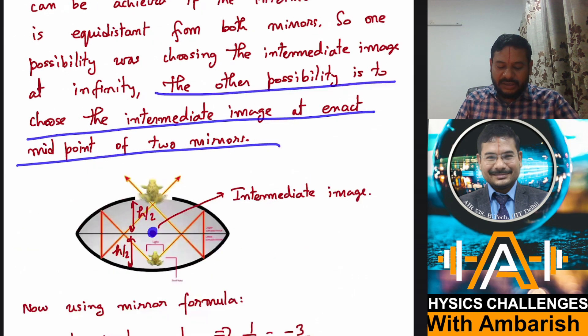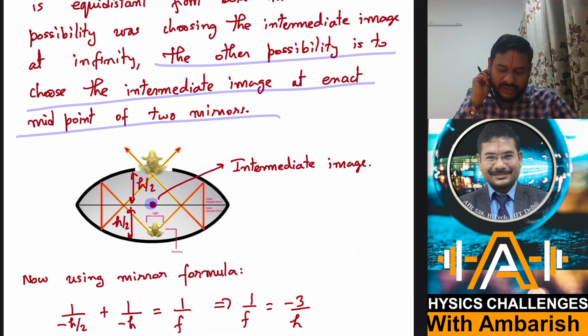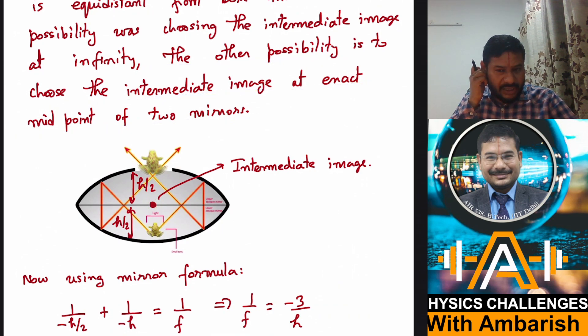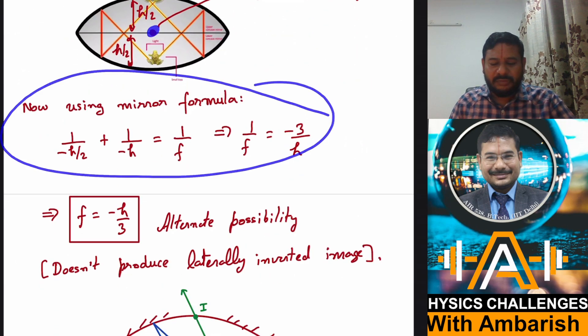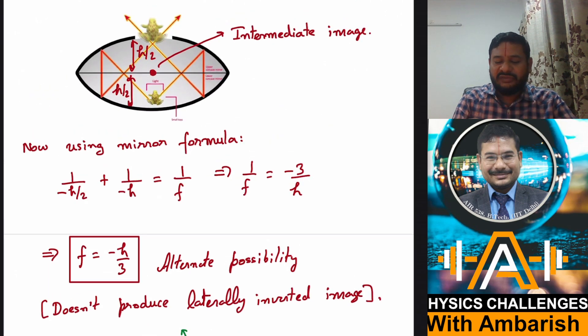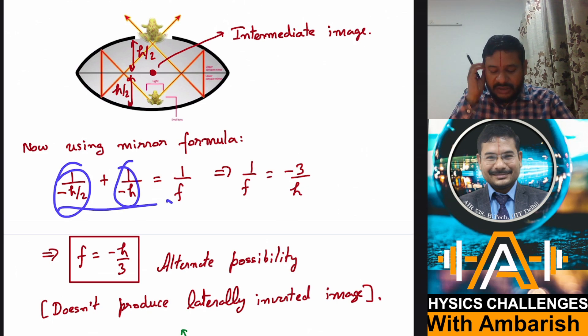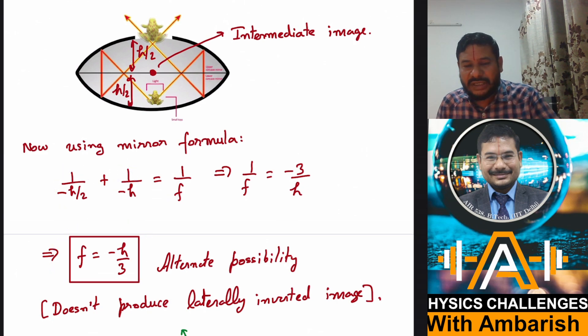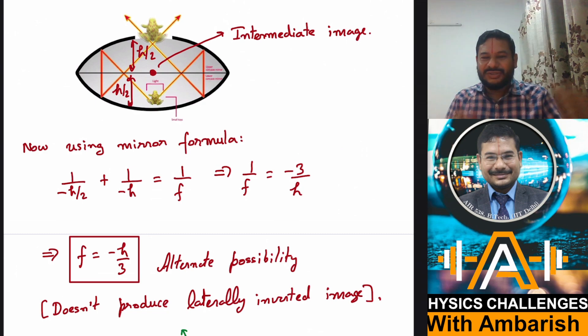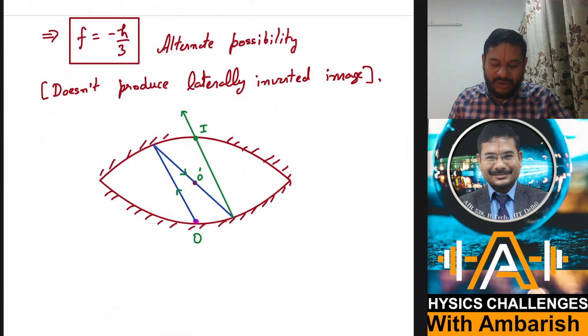So one possibility was choosing the intermediate image at infinity because infinity is equidistant from both and the other possibility is to choose the intermediate at exact midpoint of the mirror. So we can also choose the image at the exact midpoint. So now if you choose the intermediate image over here, then again you can use the mirror formula and if you just use 1 by V plus 1 by U is equal to 1 by F, then you get F is equal to minus H by 3. So that is also a valid solution and it, I'll show you that this doesn't produce a radially inverted image rather it produces the same kind of image. It just transfers the frog from bottom to top.